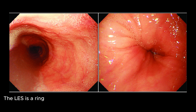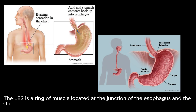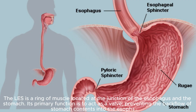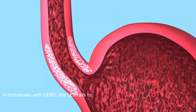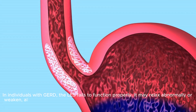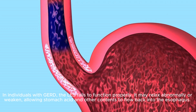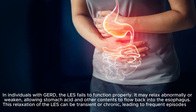The LES is a ring of muscle located at the junction of the esophagus and the stomach. Its primary function is to act as a valve, preventing the backflow of stomach contents into the esophagus. In individuals with GERD, the LES fails to function properly — it may relax abnormally or weaken, allowing stomach acid and other contents to flow back into the esophagus.